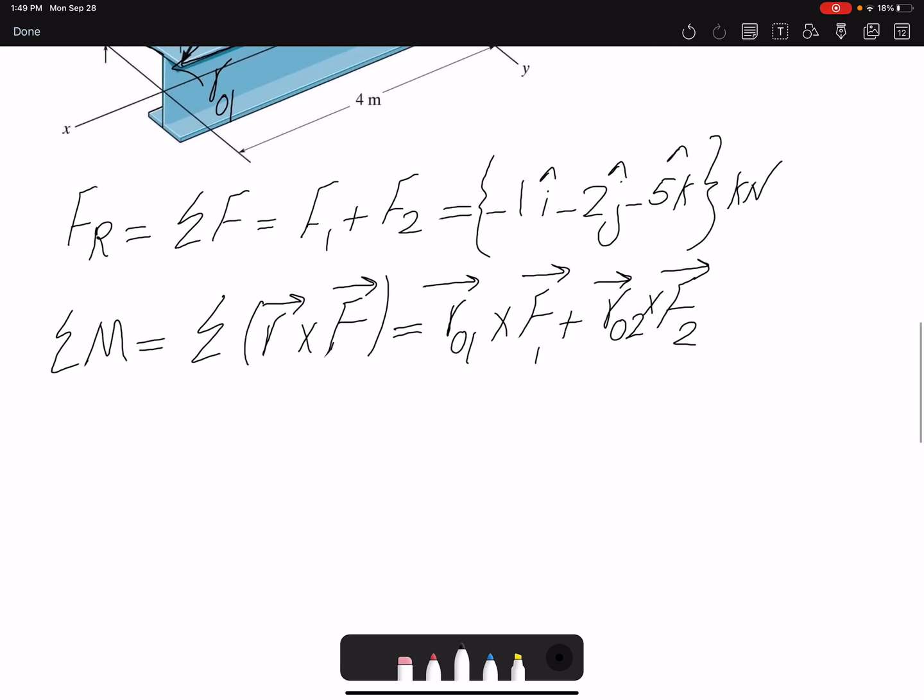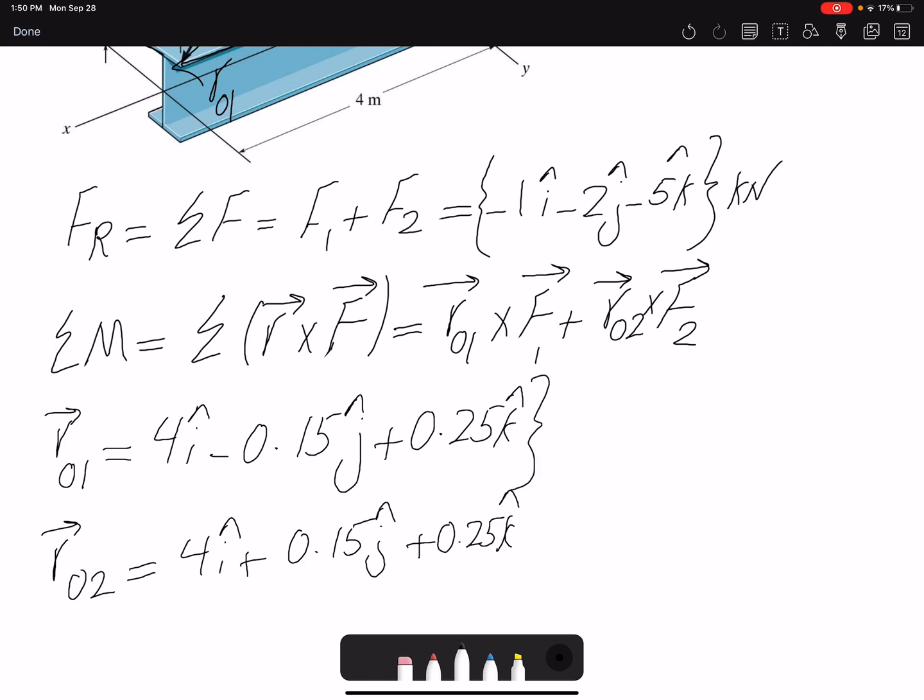If you look at the image, you can find a position vector from O to 1. O is the origin. So the coordinate is 0, 0, 0. So we only need to find a coordinate of point 1. Which is 4I minus 0.15 J plus 0.25 K. Same thing. R_O2 would be 4I plus 0.15 J plus 0.25 K. And the units are in meter.